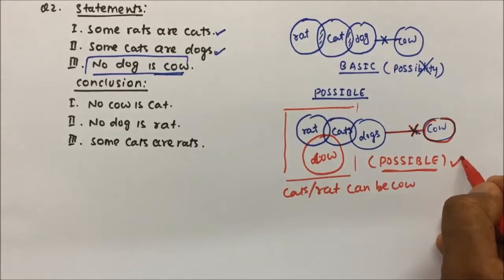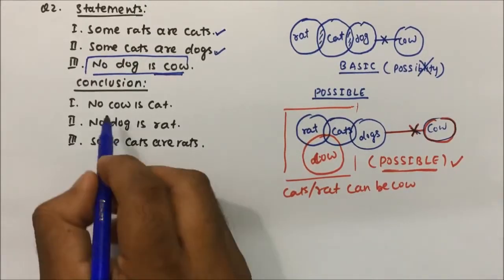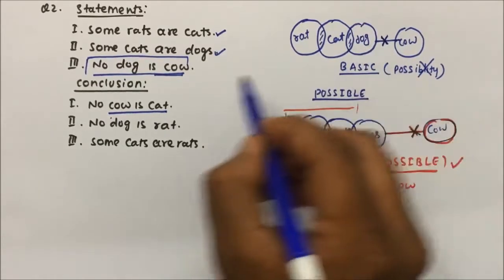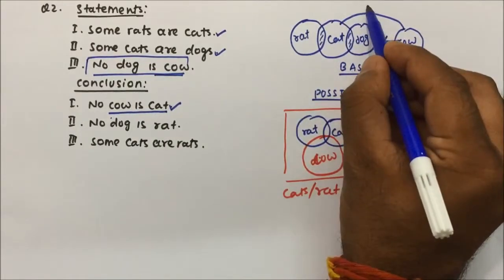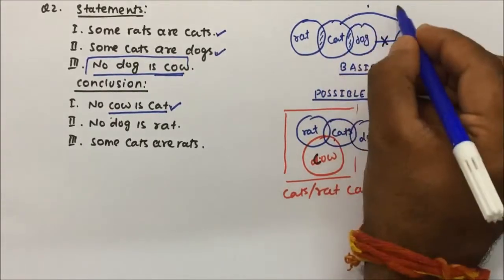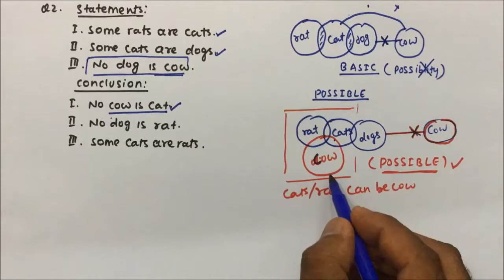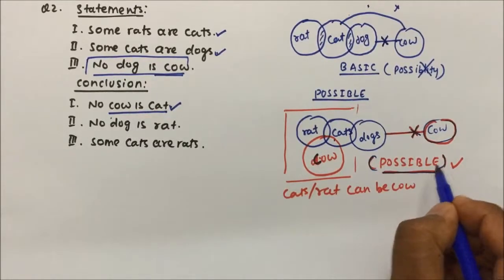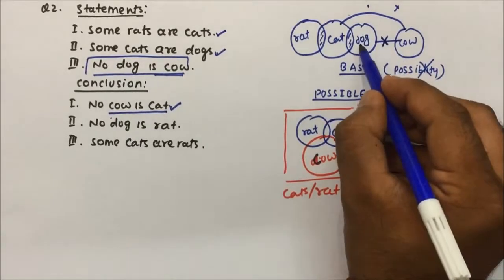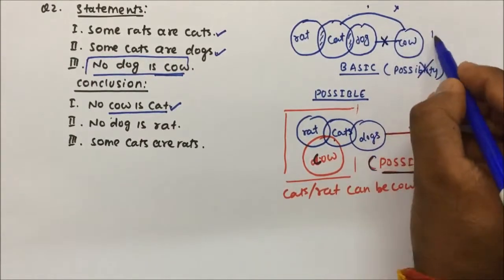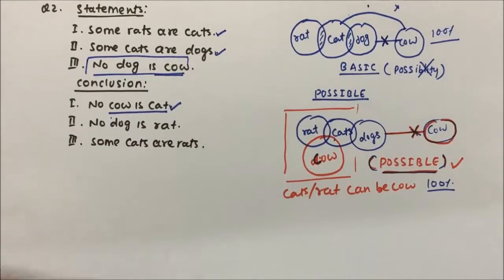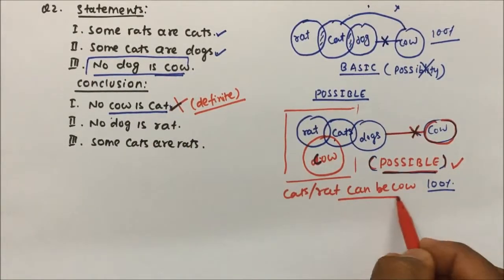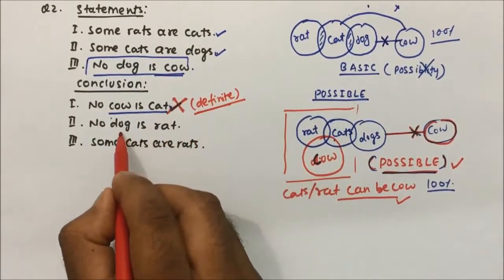We use possible diagrams to check conclusions. Conclusion 1: No cow is cat. From the basic diagram we can say cow is not dog, but cow and cat — that relation is not given. The cow can be cat and the cow cannot be cat, so the relation is not clear. We made possible diagrams to show there is a possibility cow will be cat, but this is only a possibility, not 100% definite. So Conclusion 1 will be false because there is no definite conclusion — it may be a possibility, but not certain.